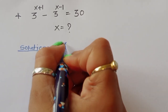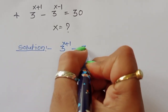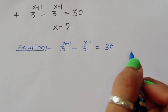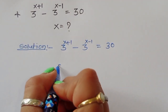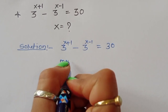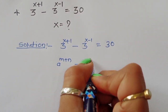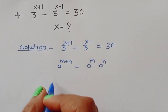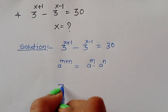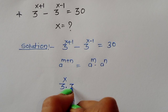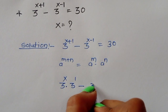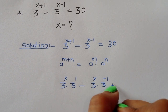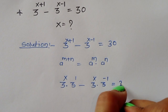We start with 3^(x+1) minus 3^(x-1) equals 30. We know the formula: a^(m+n) can be written as a^m times a^n. Using this formula, we can write 3^x times 3^1 minus 3^x times 3^(-1) equals 30.